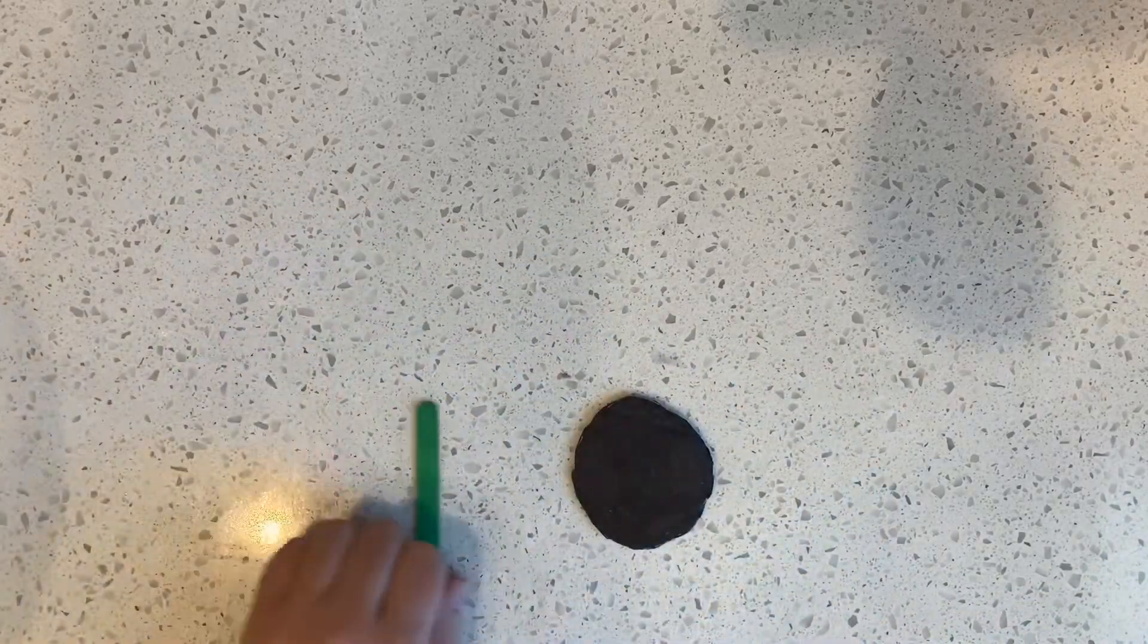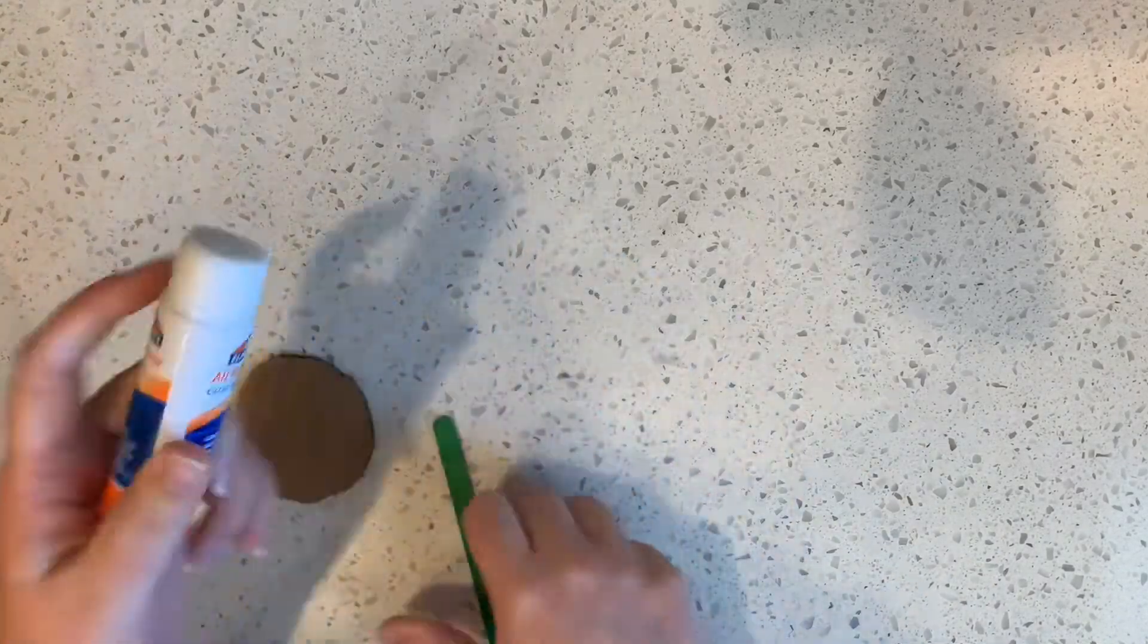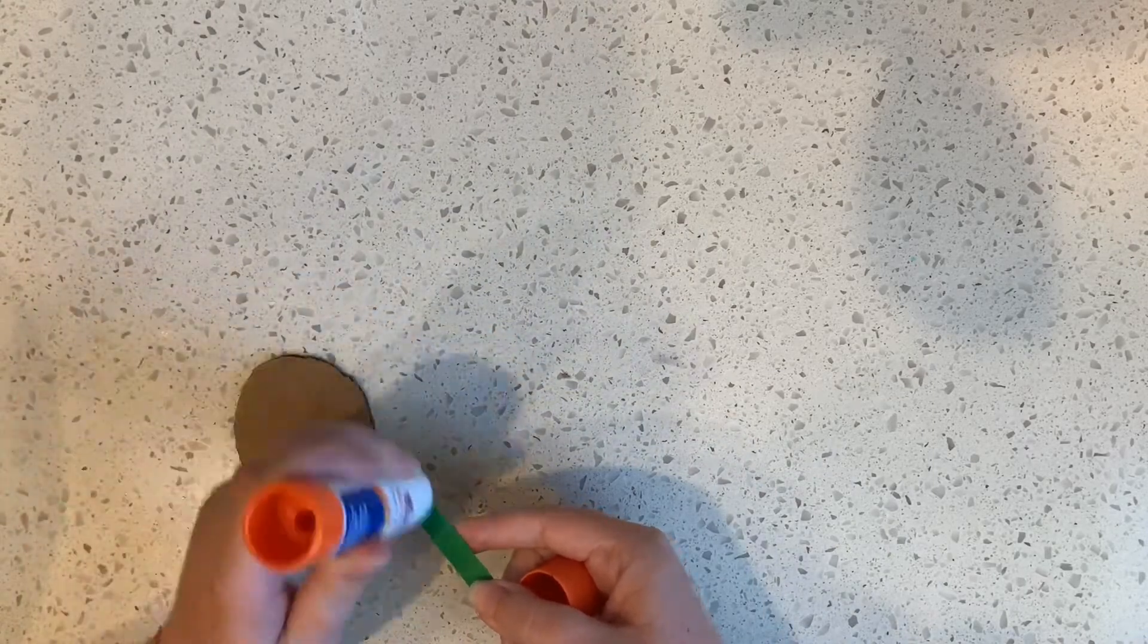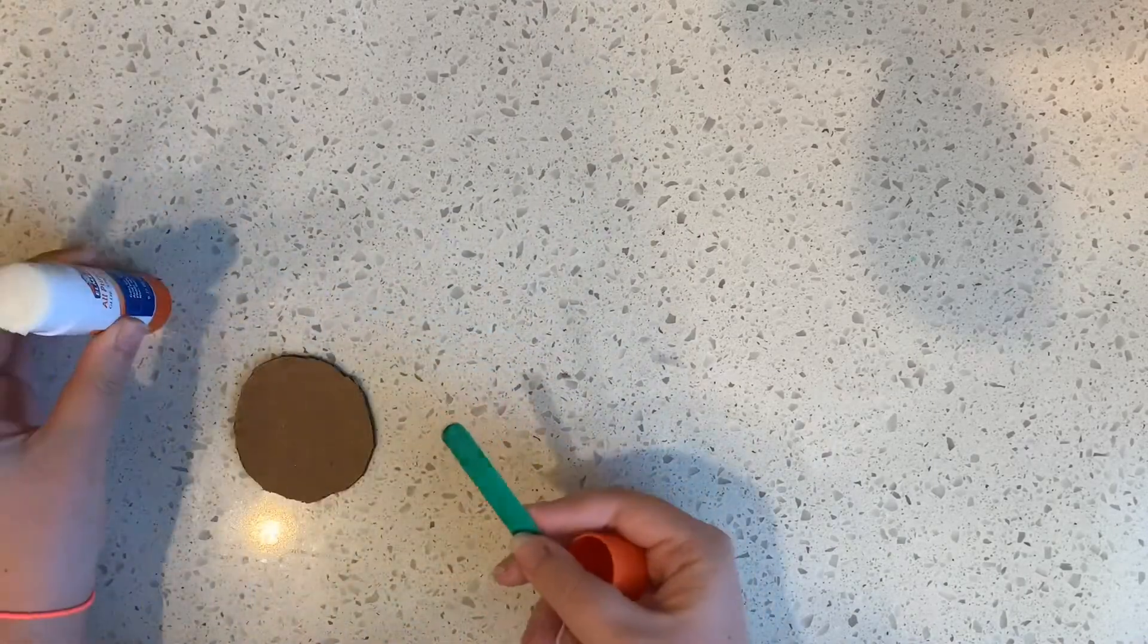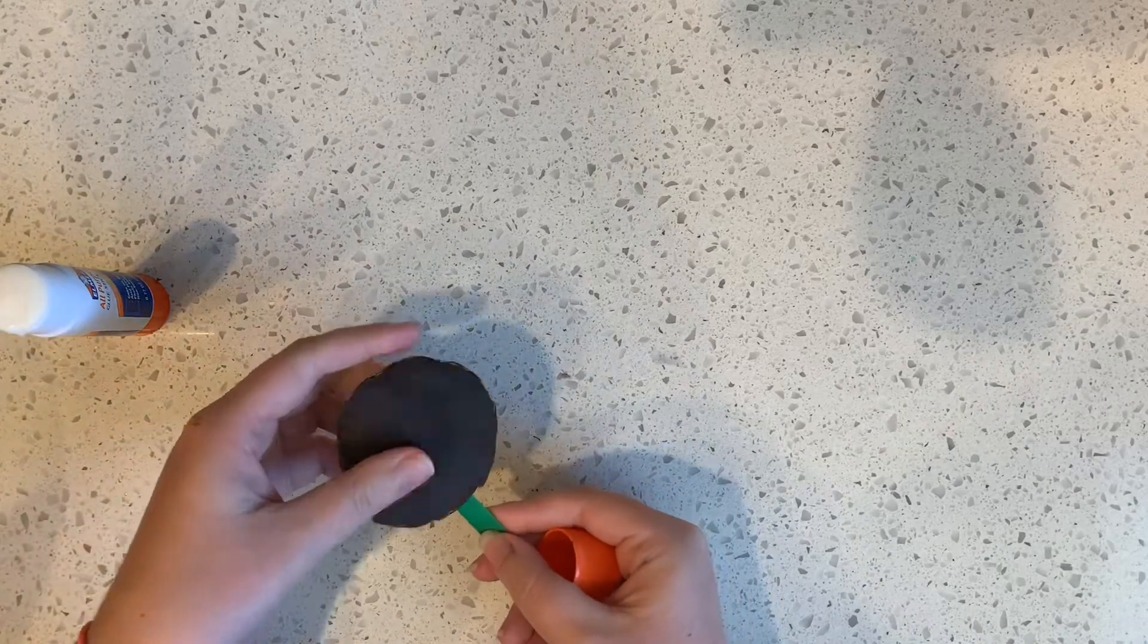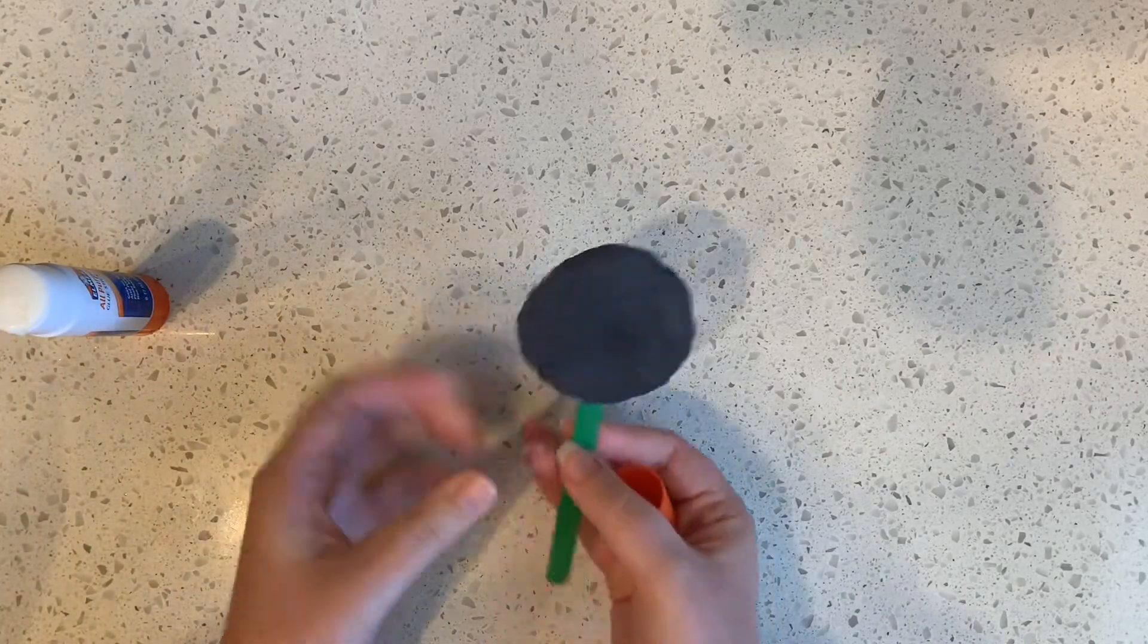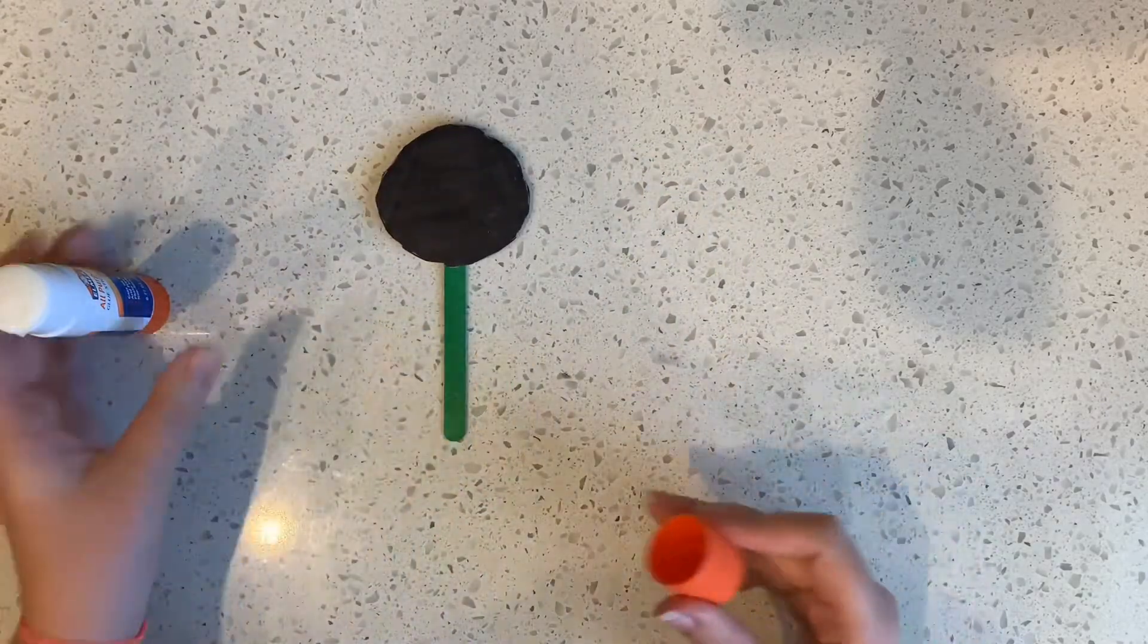So what I'm gonna do is I'm gonna glue my popsicle stick. Put some glue on the top. I'm gonna glue it to the cardboard. There we go. So now I have that ready to go.